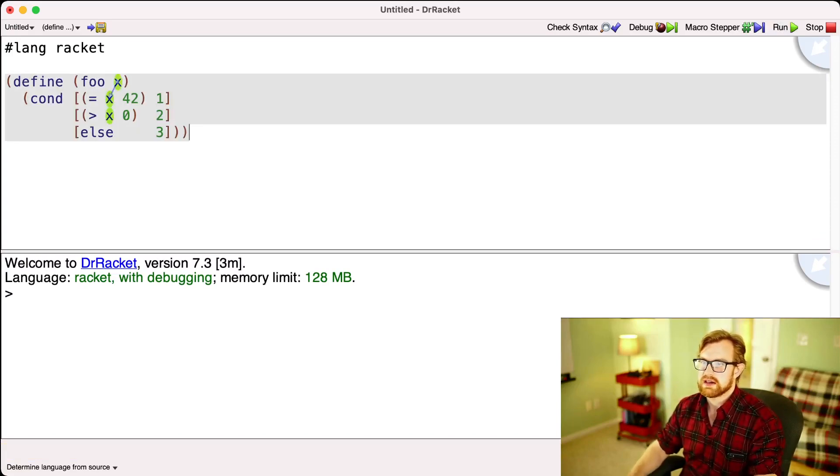we have this function foo of x, and it's going to say cond, under the circumstance that x is equal to 42, we're going to return 1. If that's not the case, then we go down to check the next guard. If x is greater than 0, then we return 2. Else, we return 3.